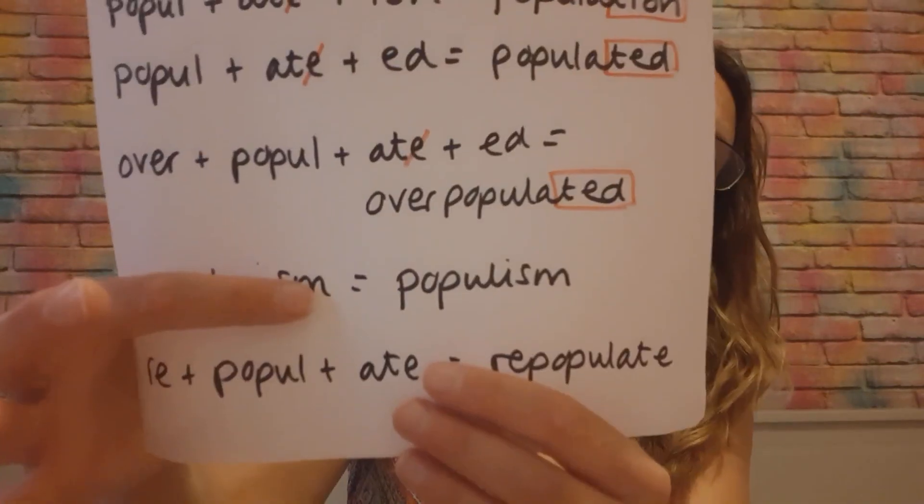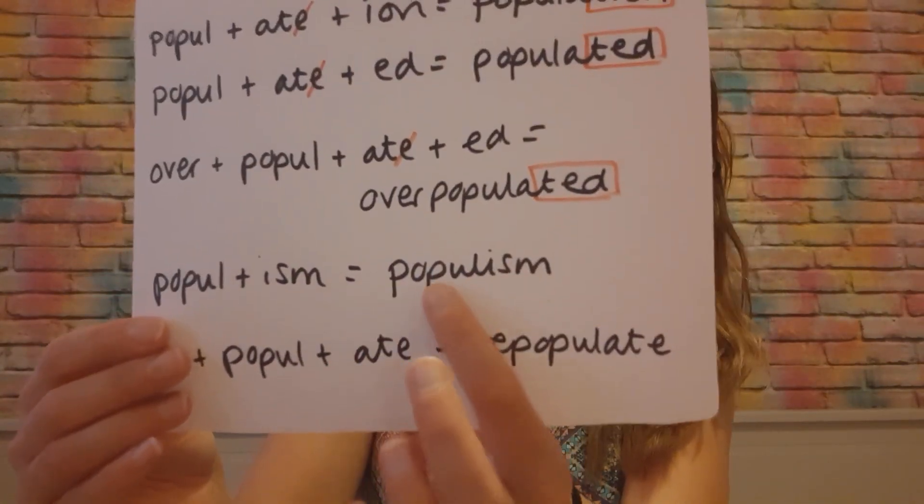And then this one, 'populism,' was on its own at the bottom. This is a type of politics that basically represents the people — the people's choice. Populism is like a brand of American politics spreading worldwide, representing the mass people as opposed to the elite — a bit like socialism really. And again, you could figure that out if you know that 'popular' relates to the people. That's why words are brilliant.